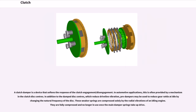A clutch damper is a device that softens the response of clutch engagement/disengagement. In automotive applications, this is often provided by a mechanism in the clutch disc centers. In addition to the damped disc centers, which reduce driveline vibration, pre-dampers may be used to reduce gear rattle at idle by changing the natural frequency of the disc. These weaker springs are compressed solely by the rotational vibrations of an idling engine and are fully compressed and no longer in use once the main damper springs take up drive.